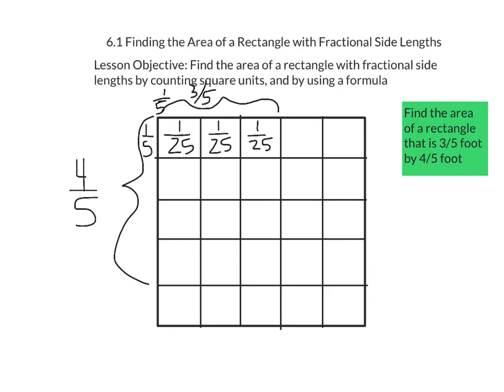I'm now going to go ahead and shade in where the 3/5 and 4/5 would overlap so that we can see how many 1/25 squares we have in our area model. When we go ahead and count, we see that we shaded in 12 pieces that have an area of 1/25. Therefore, 12 times 1/25 would be equal to 12/25.